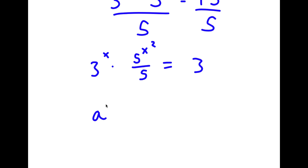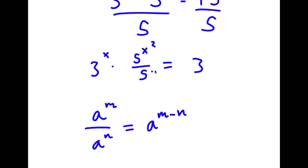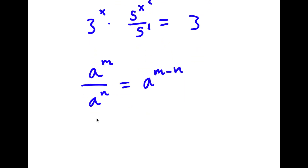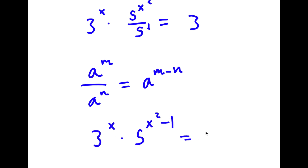If I have something in the form a to the power of m over a to the power of n, this is equal to a to the power of m minus n. So in this case, 5 is the same thing as 5 to the power of 1, and 5 to the power of x squared over 5 to the power of 1 equals 5 to the power of x squared minus 1, which is equal to 3.